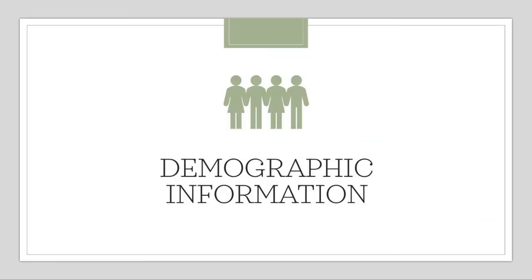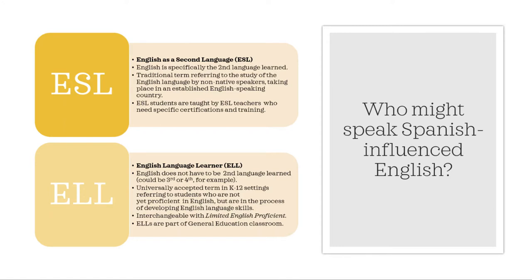Now that we've established what Spanish-influenced English is and have identified the major language components affected by it, it is important to identify who the population of Spanish-influenced English speakers is in the United States. There are two main terms used to describe Spanish-speaking individuals who learn English: those who learn English as a second language, or ESL, and English language learners, or ELLs. The main technical difference is that ESL speakers learn English as their second language specifically, while for English language learners, English does not necessarily have to be their second language — it could be their third or fourth.